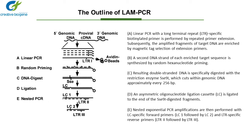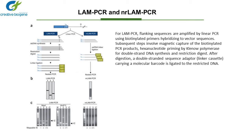E. Nested exponential PCR amplifications are then performed with LC-specific forward primers and LTR-specific reverse primers. For 4-LAM-PCR, flanking sequences are amplified by linear PCR using biotinylated primers hybridizing to vector sequences. Subsequent steps involve magnetic capture of the biotinylated PCR products, hexanucleotide priming by Klenow polymerase for double-stranded DNA synthesis, and restriction digest.